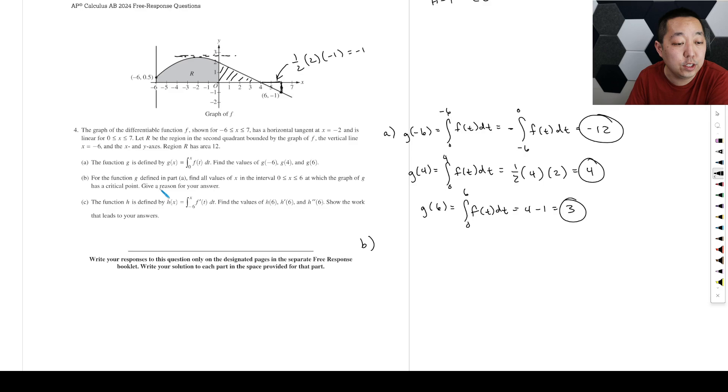Part B. For the function defined in part A, find all the values in which the graph of G has a critical point. So critical point is where the derivative is equal to zero. What is the derivative of this thing? Fundamental theorem of calculus. You just plug that X into there. You get F of X is equal to zero. Where is F of X equal to zero? Well, that's the Y value. This is a graph of F. So where that occurs are where the Y values are zero. And that occurs right at four. And anywhere else? It's also where it's undefined, technically. But I don't see any areas where it's undefined. So F of X is defined everywhere. So it should be fine.